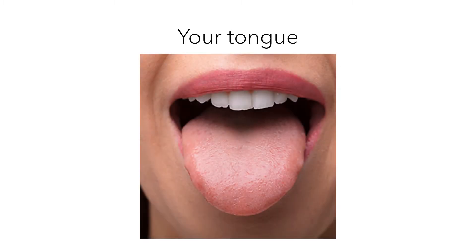If you've ever looked at your tongue in the mirror, you'll notice dozens of tiny little bumps scattered all over your tongue. In each of these bumps, we have something called a taste bud. The taste bud is the part of our tongue that allows us to taste these five different flavors. We have three different types of taste buds, so let's go ahead and look at what each of these taste buds is like.